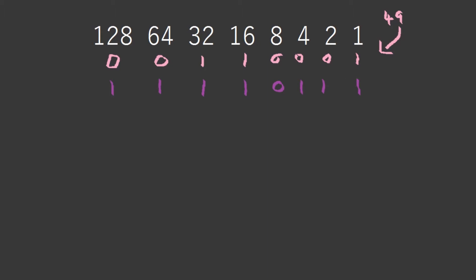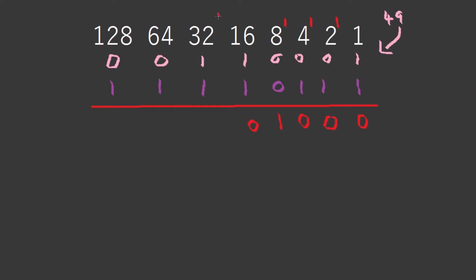Now let's add them together. In order to do this, we add them as I've taught before. 1 plus 1 — I'll add a straight line here to make everything look pretty. So 1 plus 1: leave a 0 here and carry the 1. 1 plus 1 is 0, carry the 1. 1 plus 1 is 0, carry the 1. 0 plus 0 is 1. Then we get 1, 0, and then 1. For 3, you put a 1 and a 1 there, then 0, and a 1, and then 1, 0.